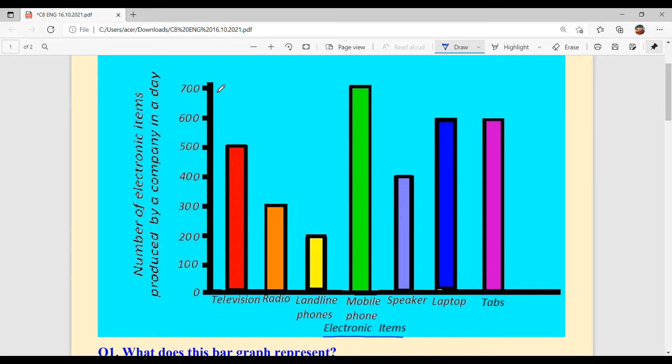On Y axis, it's number of electronic items produced by a company in a day. The number of electronic items is 100, 200, 300, 400, 500, 600, 700. Now, let us see what number of electronic items.